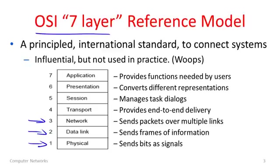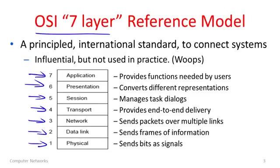Now we might talk about sending packets across multiple networks, as in the internet. On top of this is the transport layer, which provides different kinds of end-to-end delivery services, such as reliable delivery. On top of that are another couple of layers. The session layer manages task dialogues — it brings together many different components used in a related way so they can be manipulated as one. For instance, an application might use many different connections across the network, all in service of a single application. The presentation layer is about different representations for information — different file, image, and video formats — because many applications can communicate using different kinds of formats for the same inherent content. And finally above that is the application layer, which provides whatever specific functionality is needed by users.